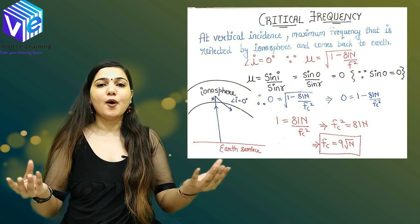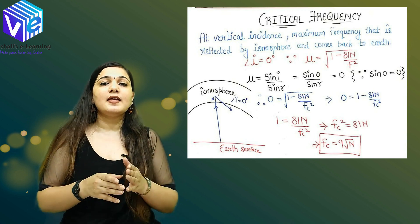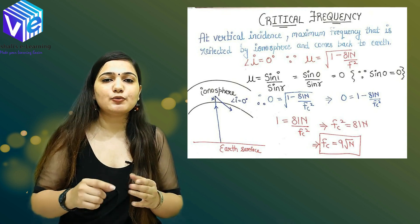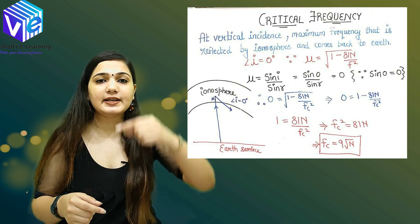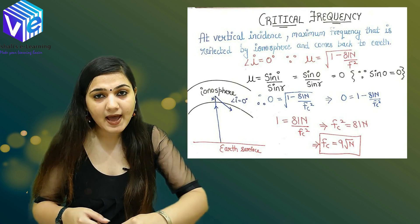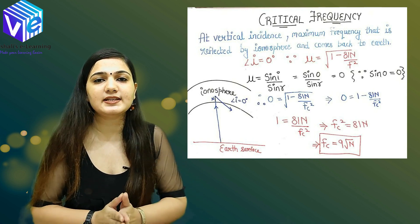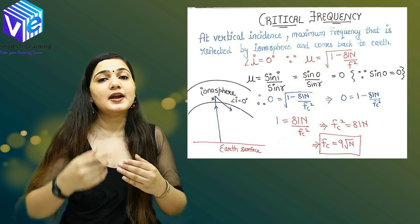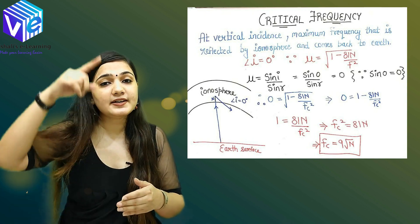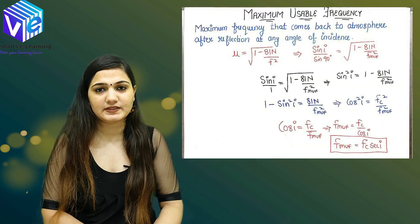Therefore, 81N equals Fc squared, or Fc equals 9 times the square root of N. Now we know the formula of critical frequency. It is the maximum frequency of vertical incidence by which the wave will be reflected back by the ionosphere. If you have a frequency higher than the critical frequency, it will penetrate the ionosphere and go into space.